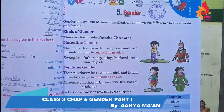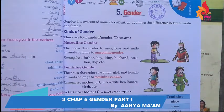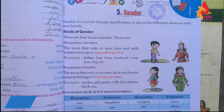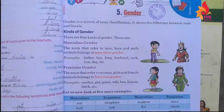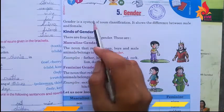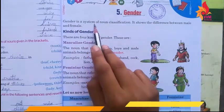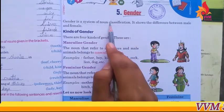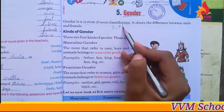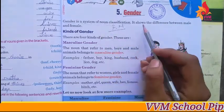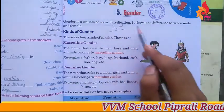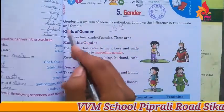Chapter number 5, Gender. What happens? These nouns or pronouns are male or female. Gender is a system of noun classification — it shows the difference between male and female.